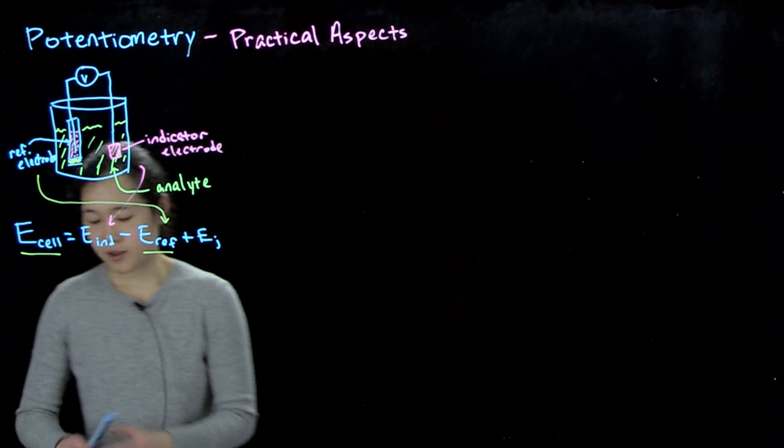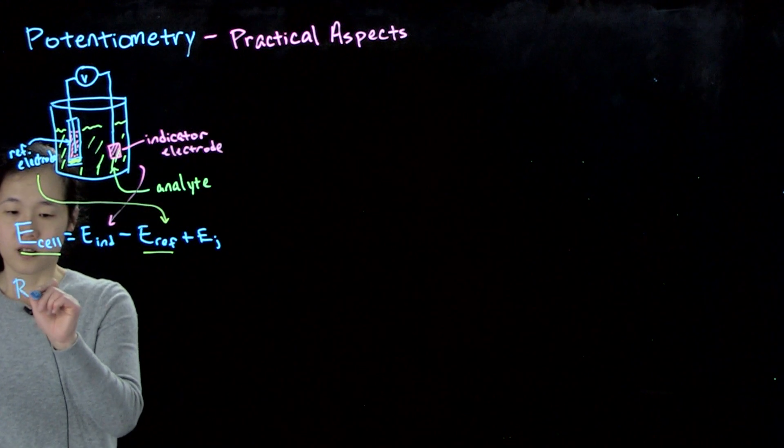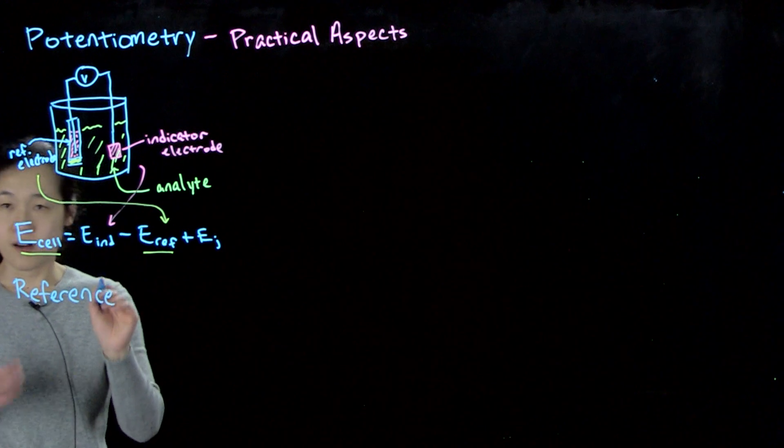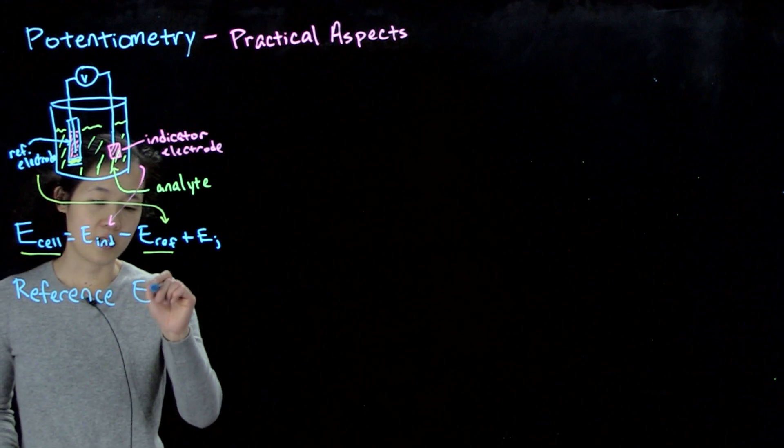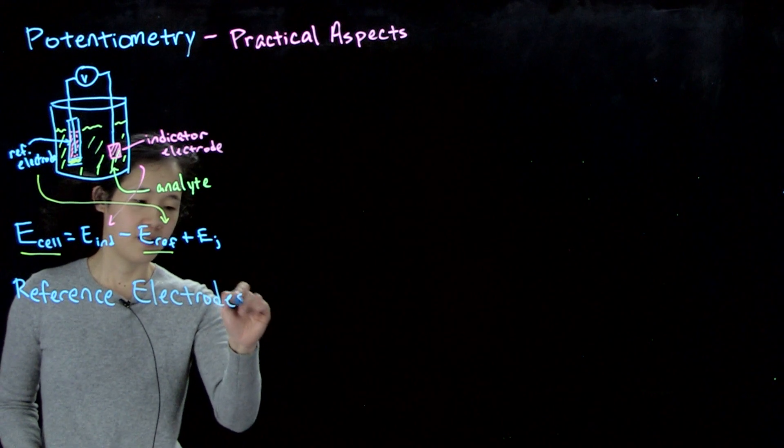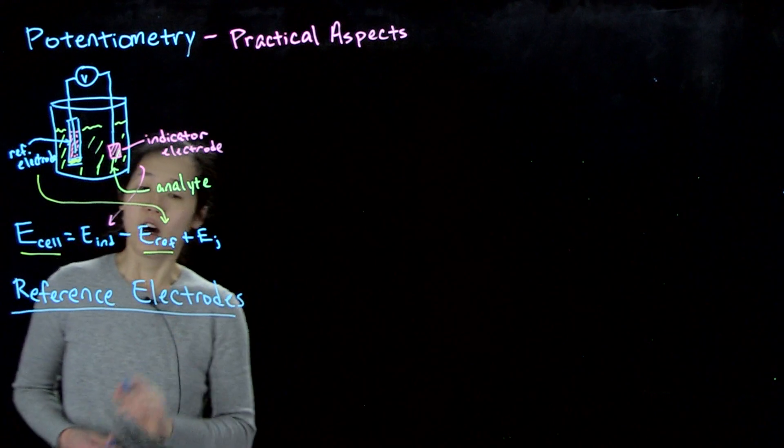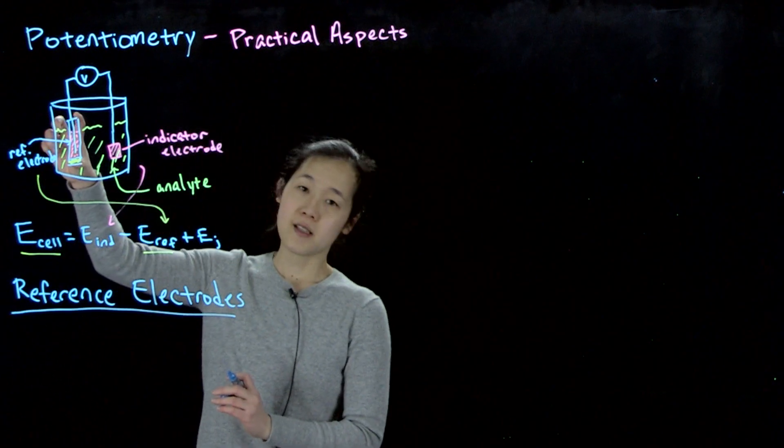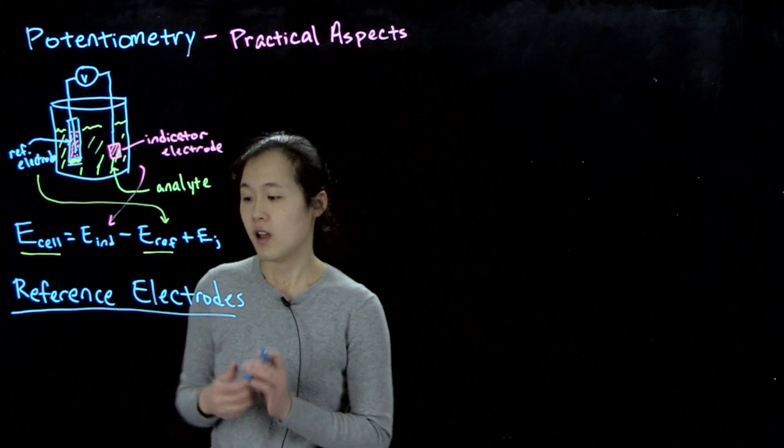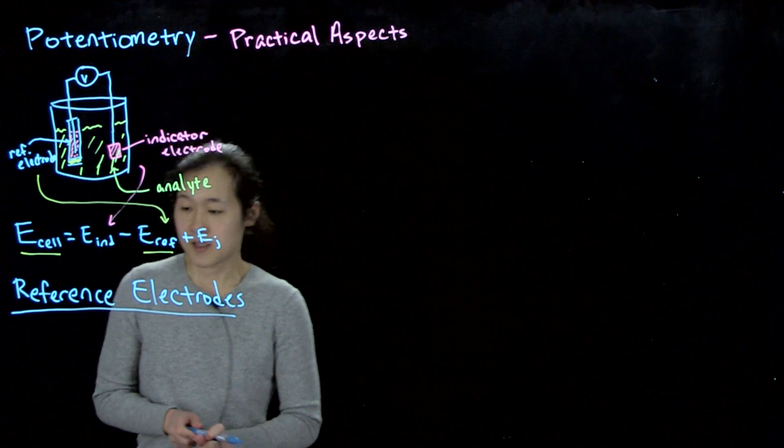So first for reference electrodes. I've said before that the standard hydrogen electrode is not readily used because it's hard to deal with hydrogen gas. So as a result, often we want something that's easily transportable. We can give it a sealed tube, just stick it in, and then just use it directly.